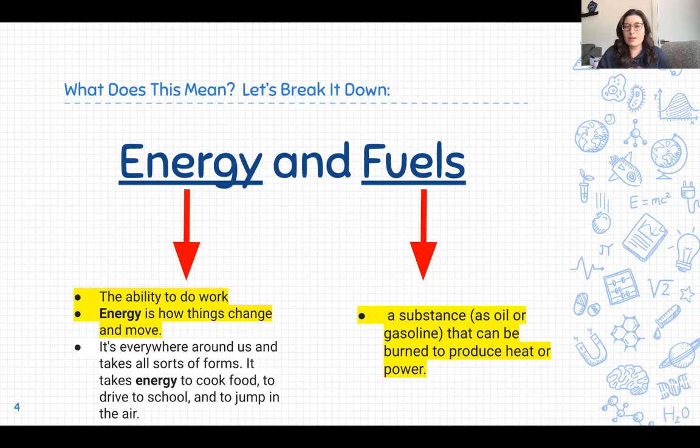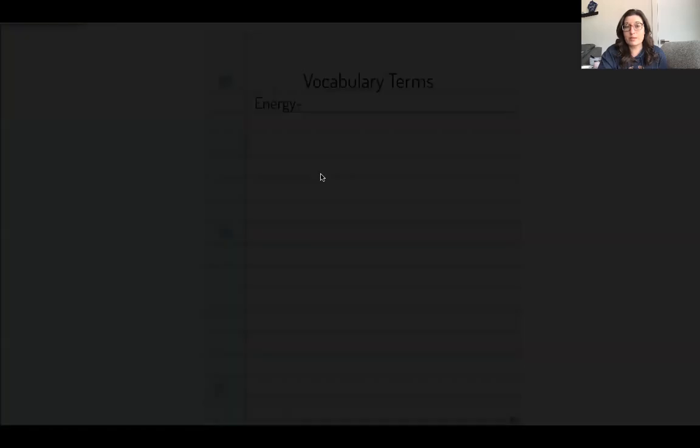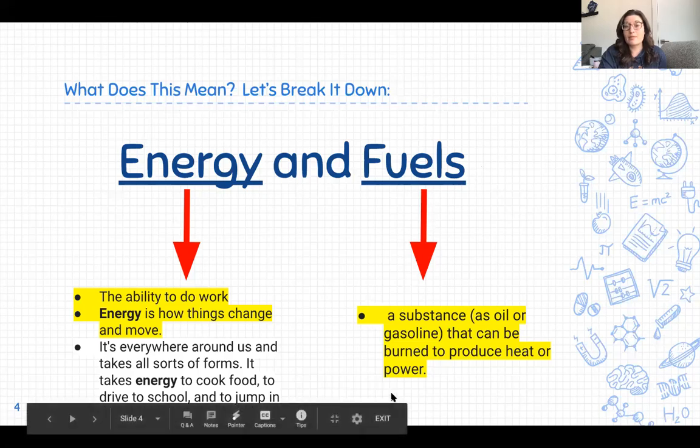Now, the word fuels. They're a substance, as oil or gasoline, that can be burned to produce or make heat or power. At this time, I would like you, in your notebook page, after you finish writing your definition for energy, you will skip a line and then write the word fuels with a dash and then write the definition that is in yellow next to it.